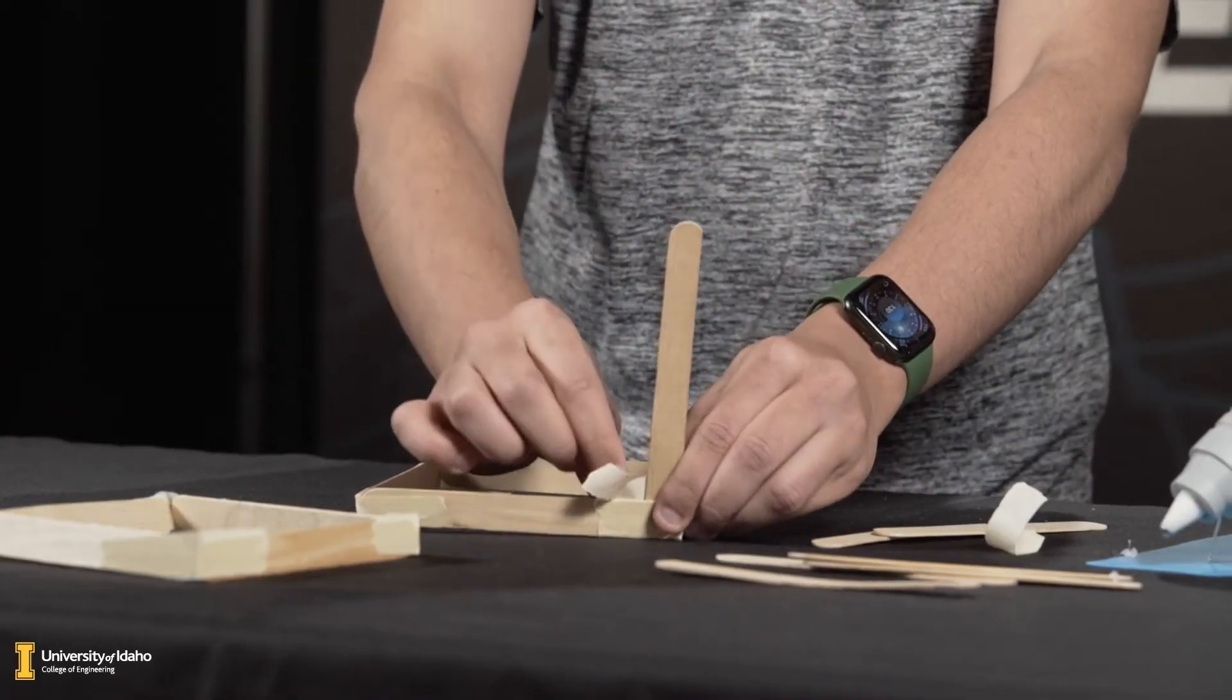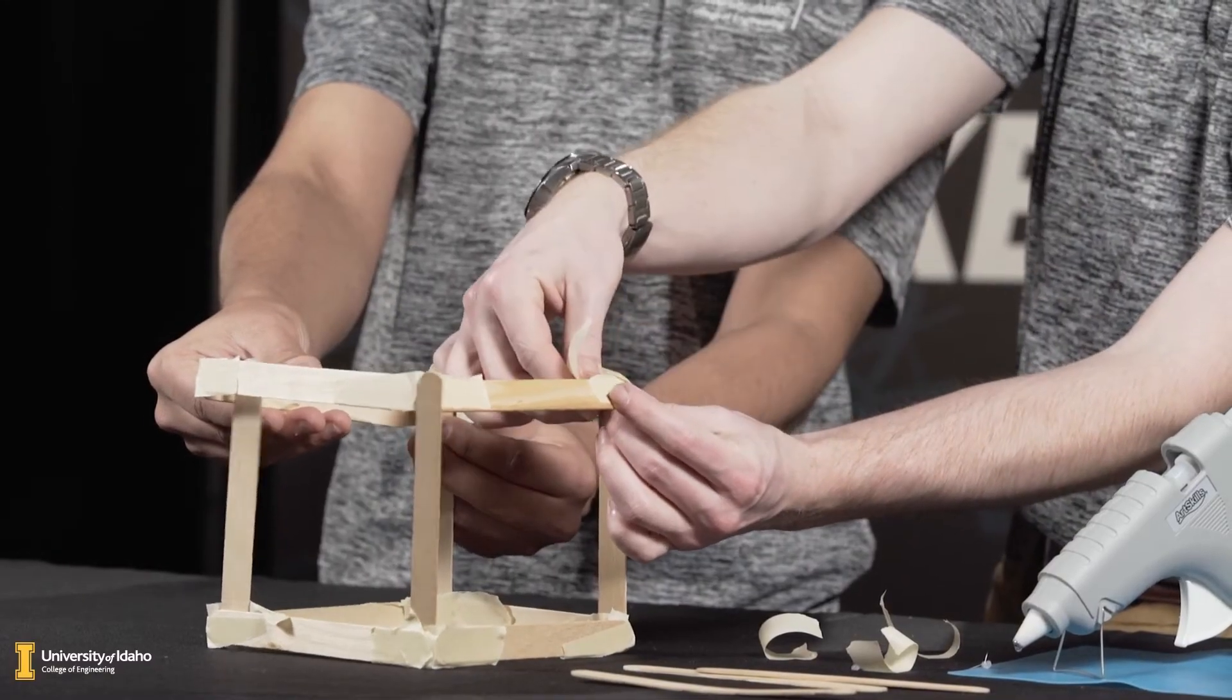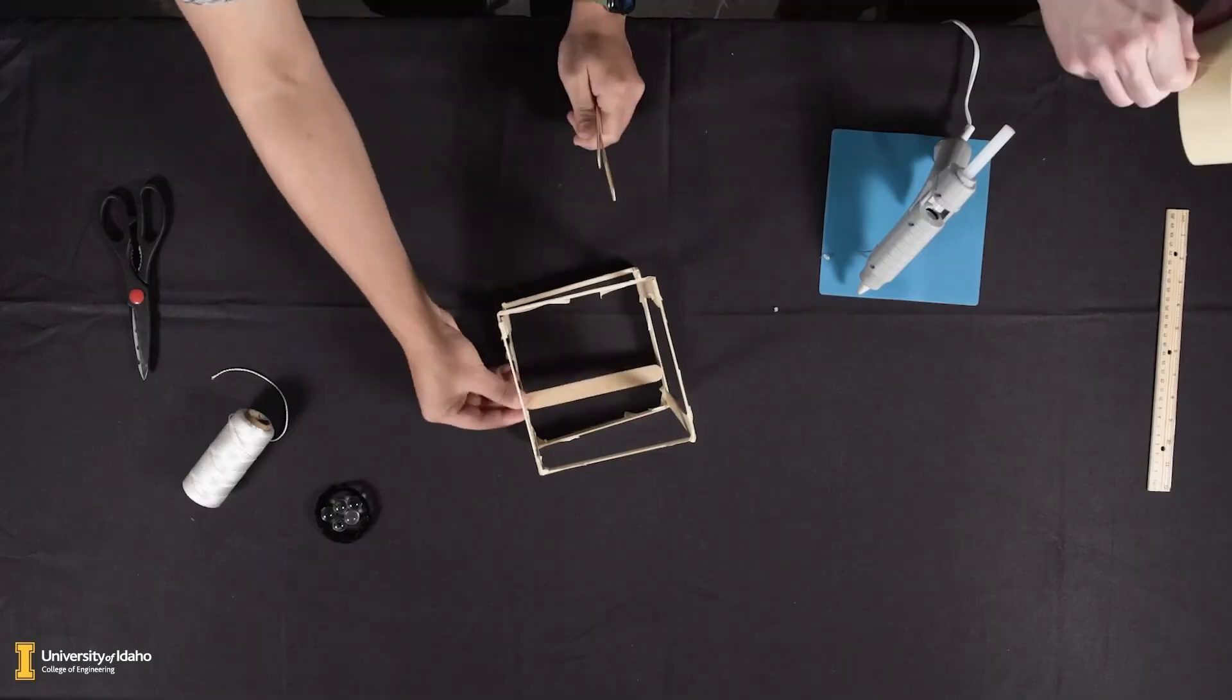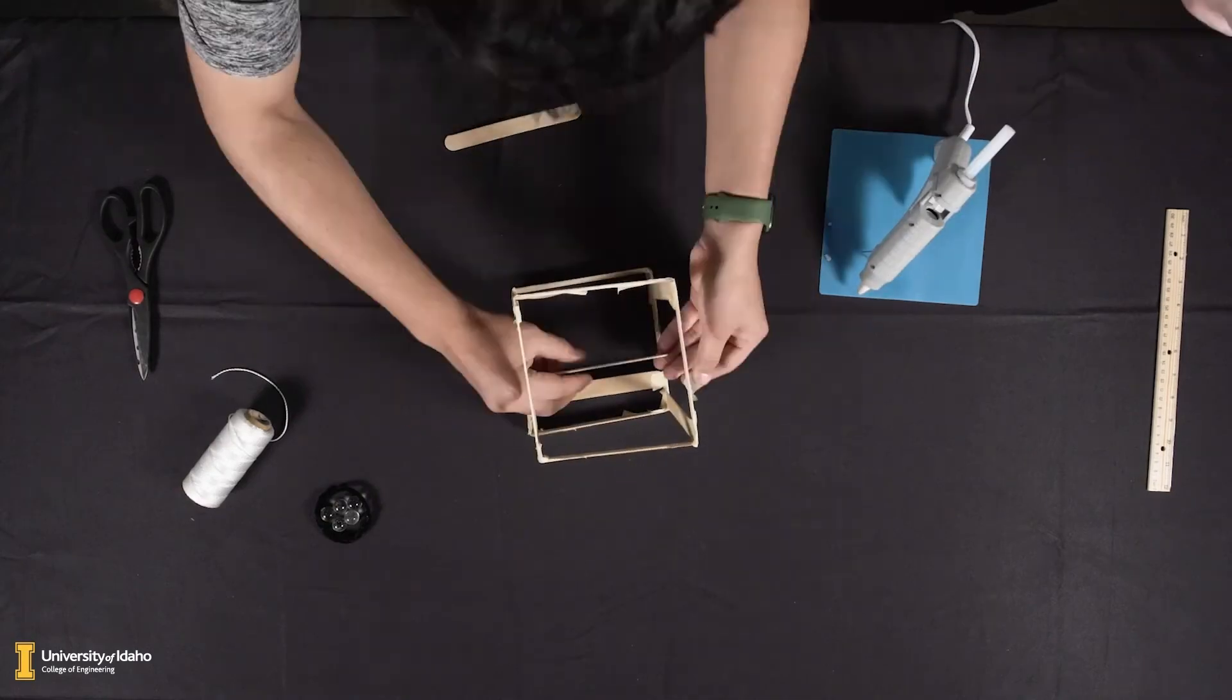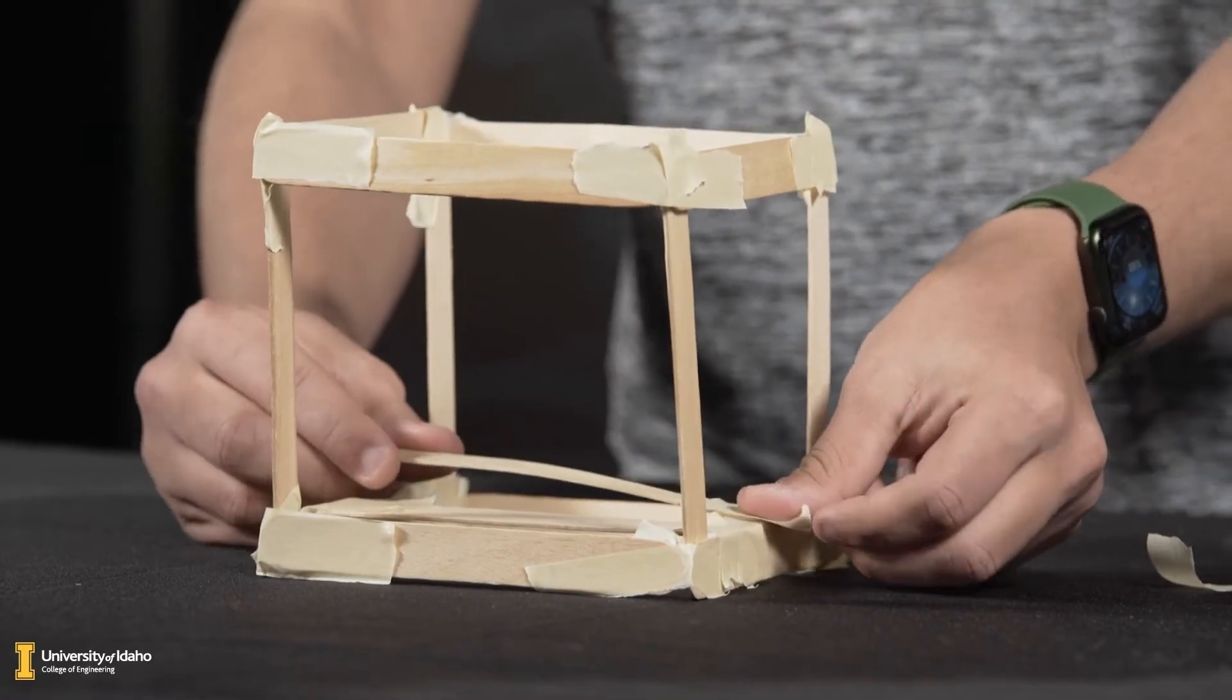Take your two squares as the top and bottom and form a cube using four more popsicle sticks. Along the bottom of the Newton's Cradle, glue or tape popsicle sticks across the bottom frame, forming a floor for your cradle. This will take about six popsicle sticks to complete.